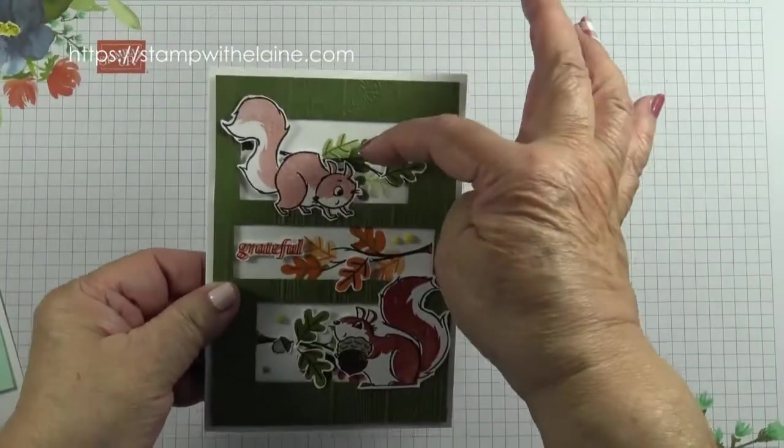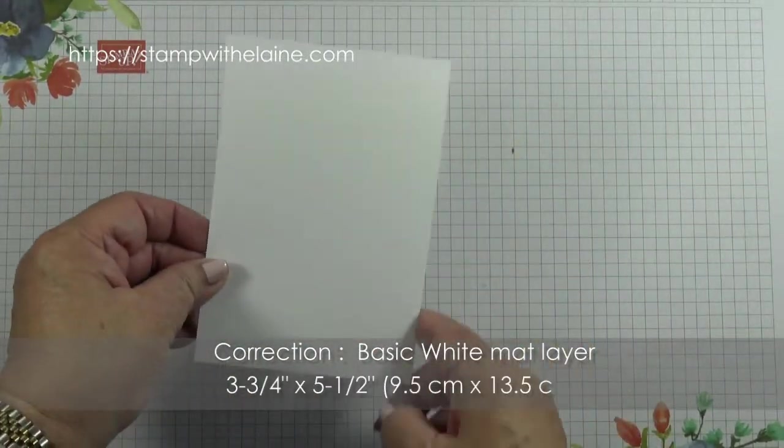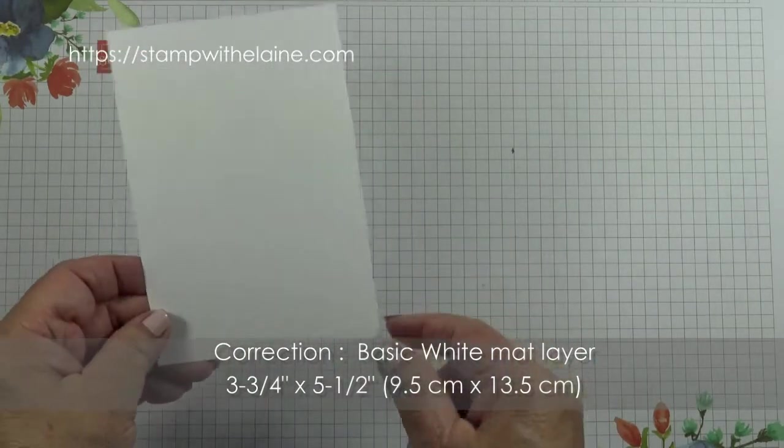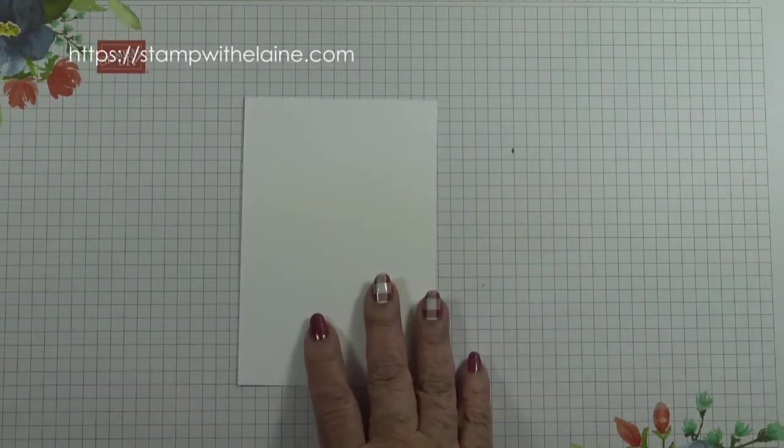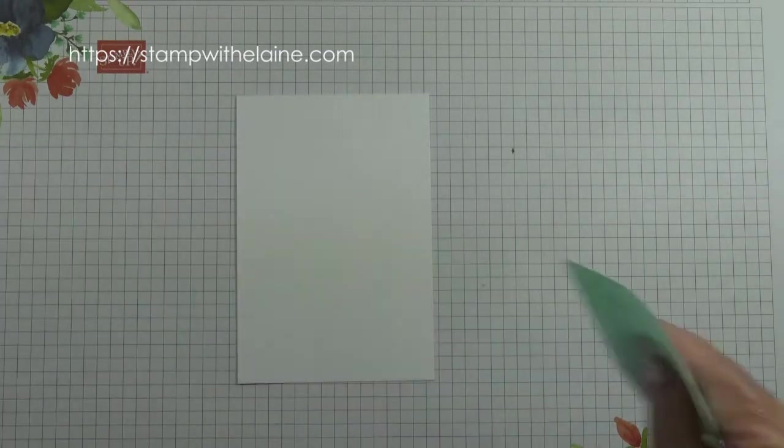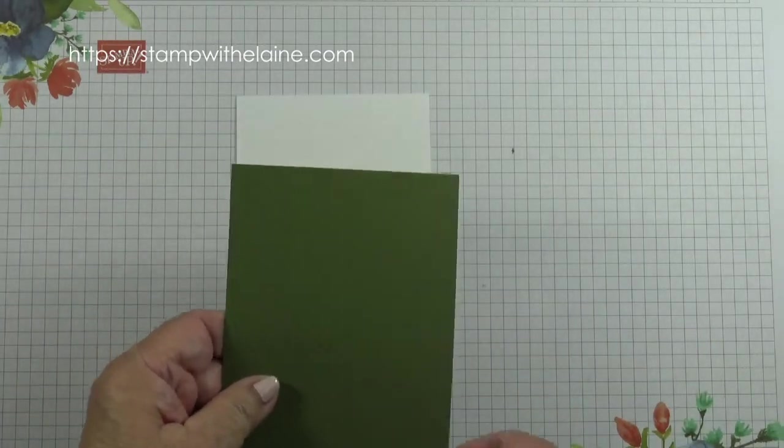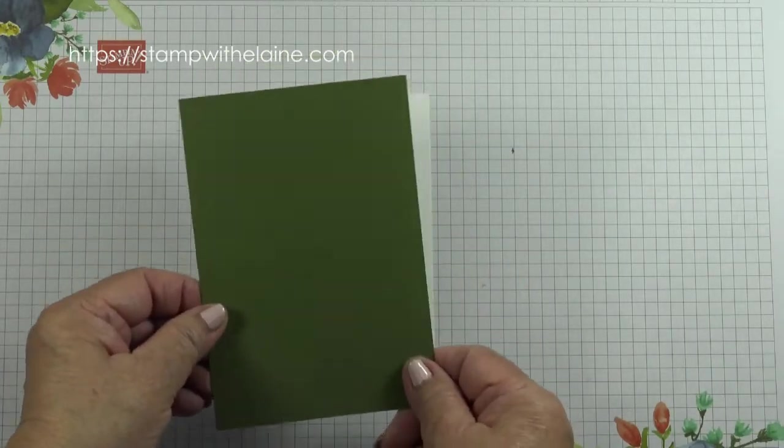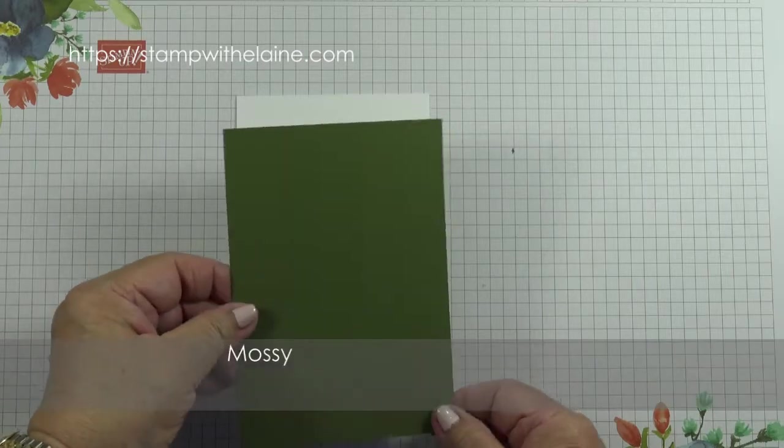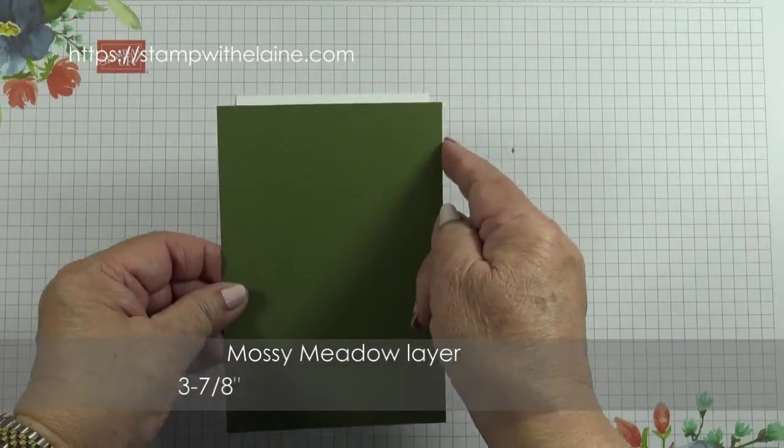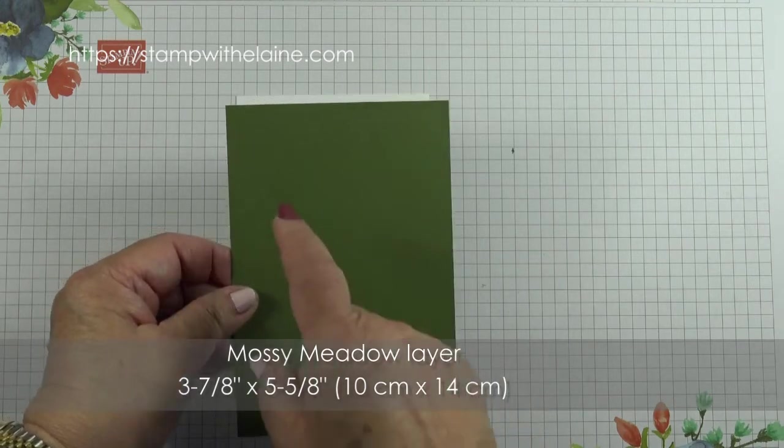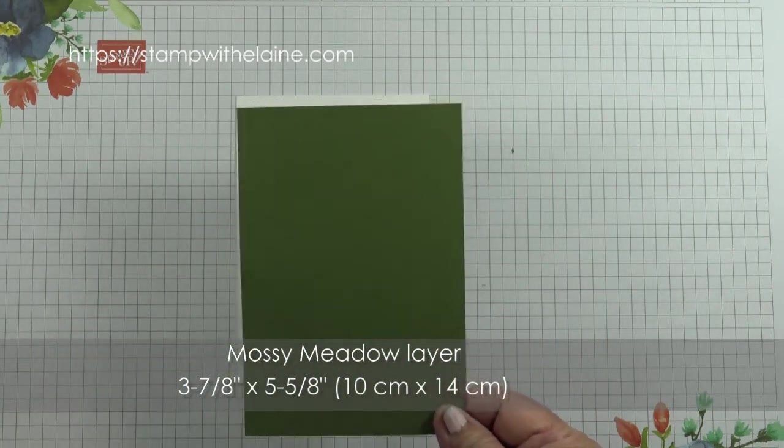This is the card we're making so behind that you need ordinary basic white which is three and three quarter inches by five and a half, that's 9.5 by 14 centimeters and that will go underneath the mossy meadow piece from which you cut a window with the picture this dies and this measures three and seven eighths by five and five eighths and in metric that will be 10 centimeters by 14 centimeters.